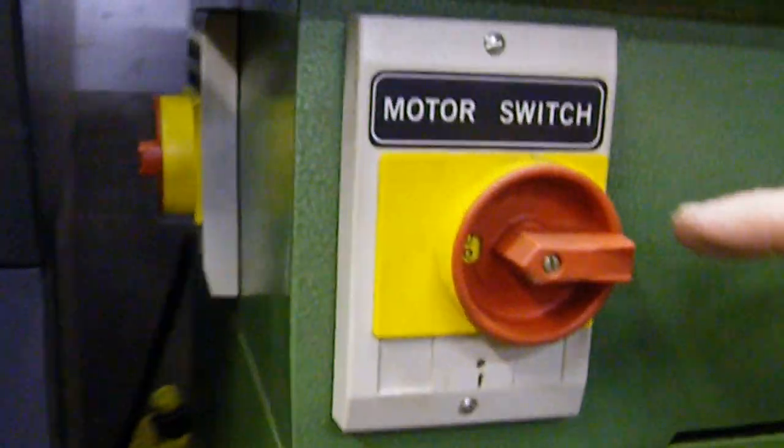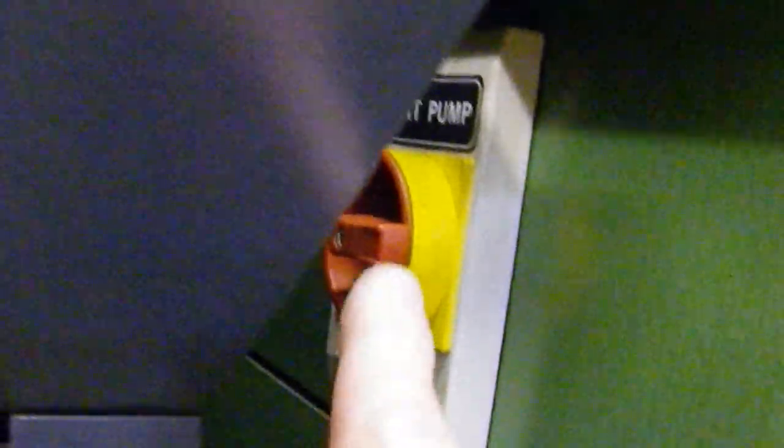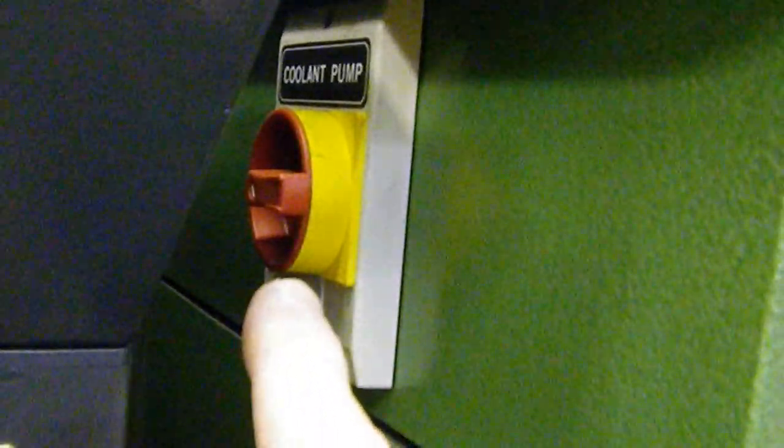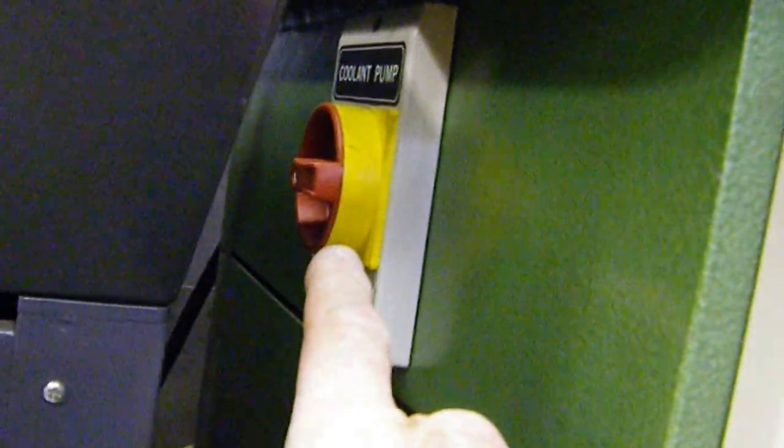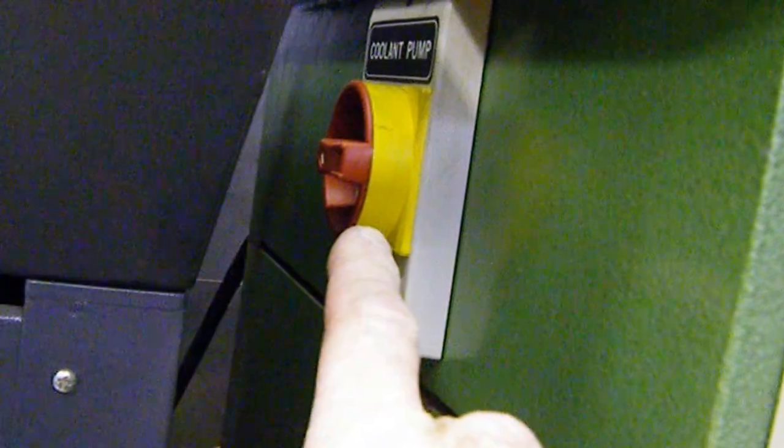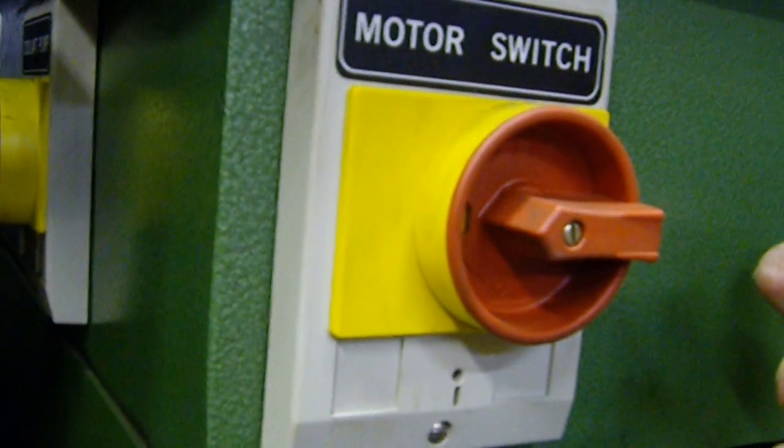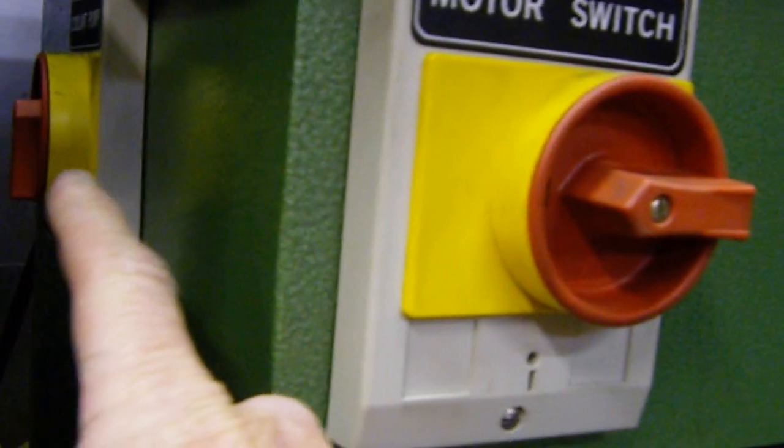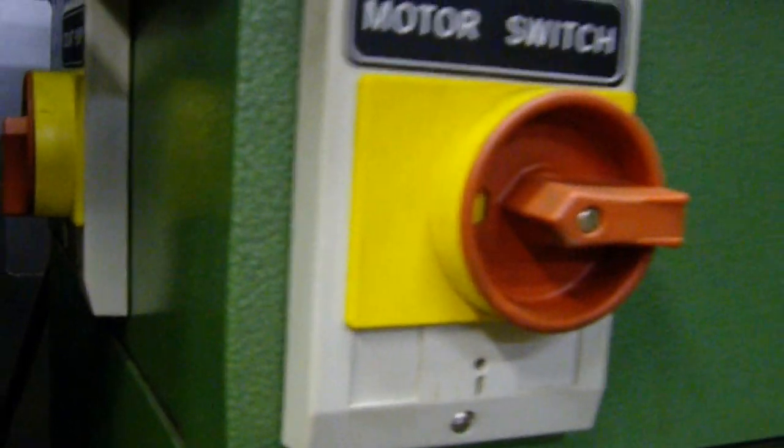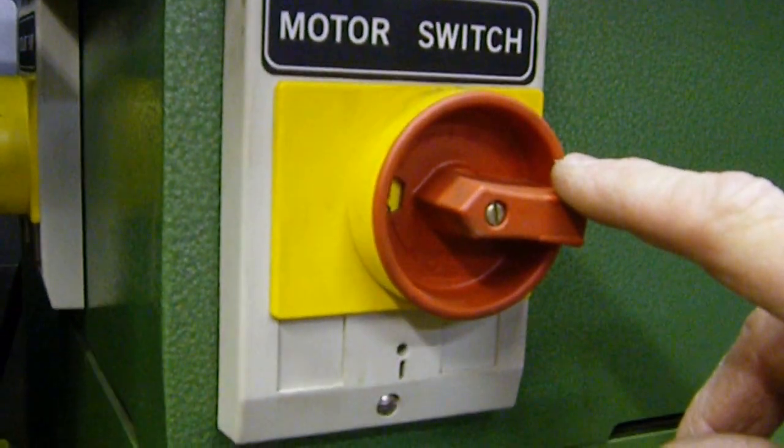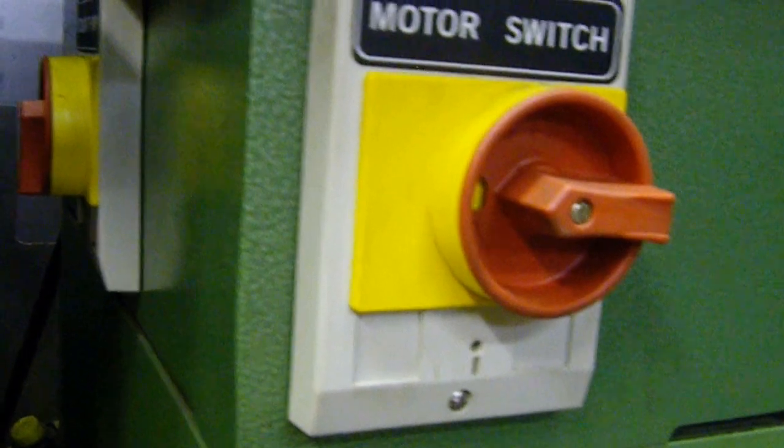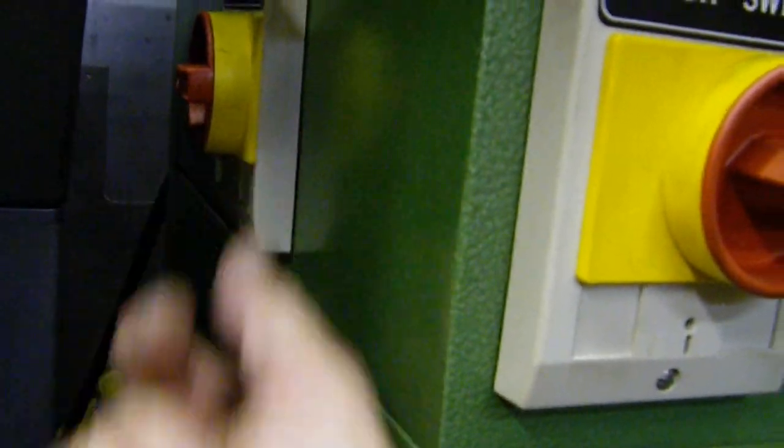So we have a motor on-off switch, and just to the left, a coolant pump on-off switch. And the way this works is you turn the coolant pump switch on. Nothing happens until you turn the main motor switch on. So if you're running coolant, you turn the coolant pump switch on, and every time you turn the motor switch on, the coolant pump turns on. If you're not running coolant, just turn it off.